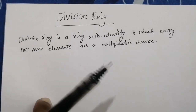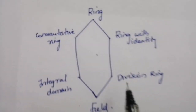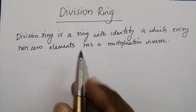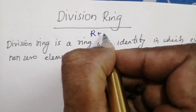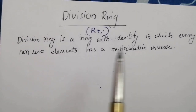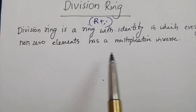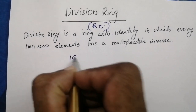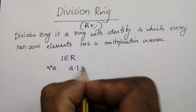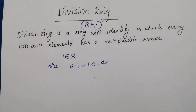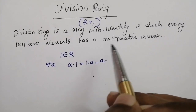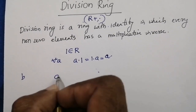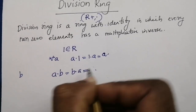Now we will discuss the concept of a division ring. A division ring will be a ring with the identity element, and it need not satisfy the commutative property. A division ring is represented as (R, +, ·) with two operations. It is a ring with identity in which every non-zero element has a multiplicative inverse. Given that 1 belongs to R, then for every element a: a·1 = 1·a = a. And if b is the multiplicative inverse of a, then a·b = b·a = 1.